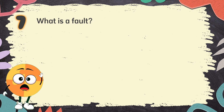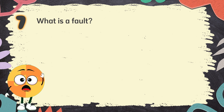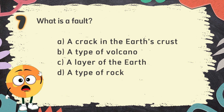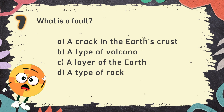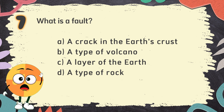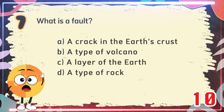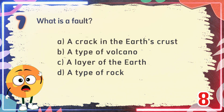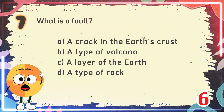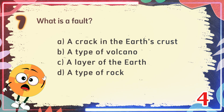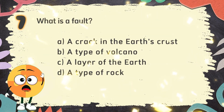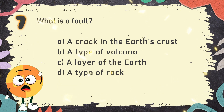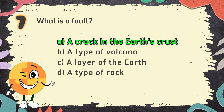Number 7. What is a fault? The choices are: A. A crack in the earth's crust, B. A type of volcano, C. A layer of the earth, D. A type of rock. The correct answer is A. A crack in the earth's crust.